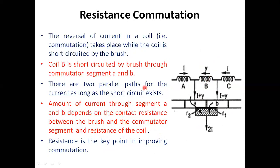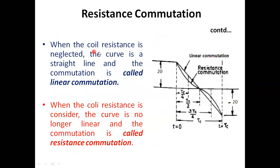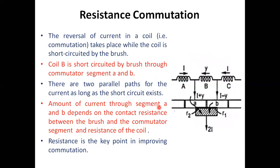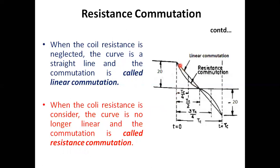Resistance is the key factor in resistance commutation. When the coil resistance is neglected, during the commutation process the current will follow a linear nature — this is called linear commutation. When coil resistance is considered, the curve is not linear; it follows a different nature from calculation. This is called resistance commutation.